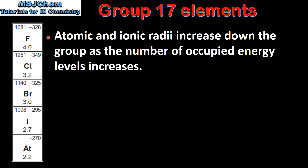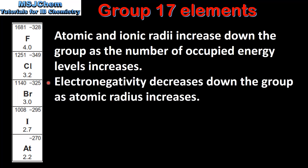The atomic and ionic radii increase down the group as the number of occupied energy levels increases. Electronegativity decreases down the group as atomic radius increases. So Fluorine at the top of group 17 is the most electronegative element, and as we go down the group electronegativity decreases.